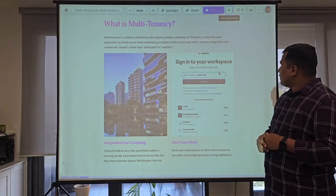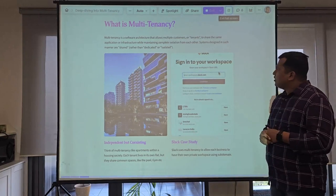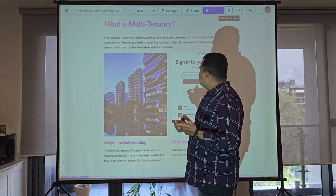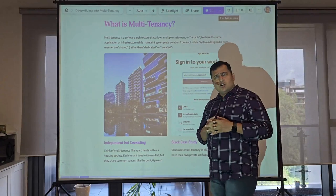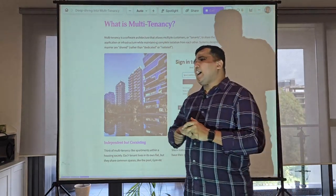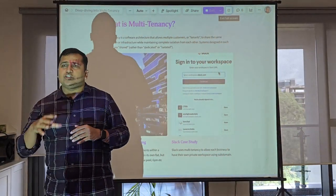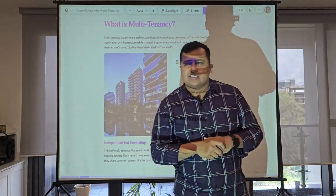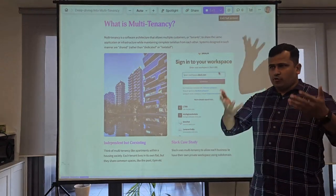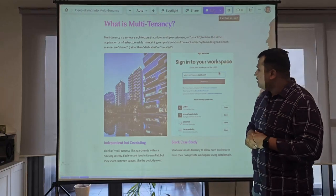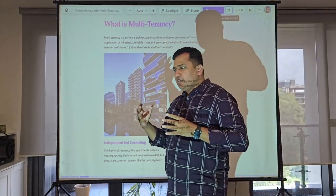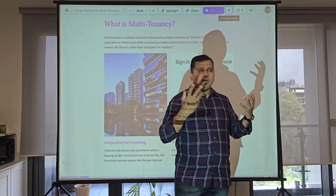What is multi-tenancy? Multi-tenancy is a system architecture that allows multiple customers or tenants to share the same application infrastructure. The system is designed in such a way that it's shared, not dedicated or isolated. People working in WordPress already know shared hosting. In multi-tenancy the architecture shares resources — CPU, database, and everything. It's like living in an apartment where you have your own flat but share amenities like a gym or swimming pool. You share some resources but also have some private space.